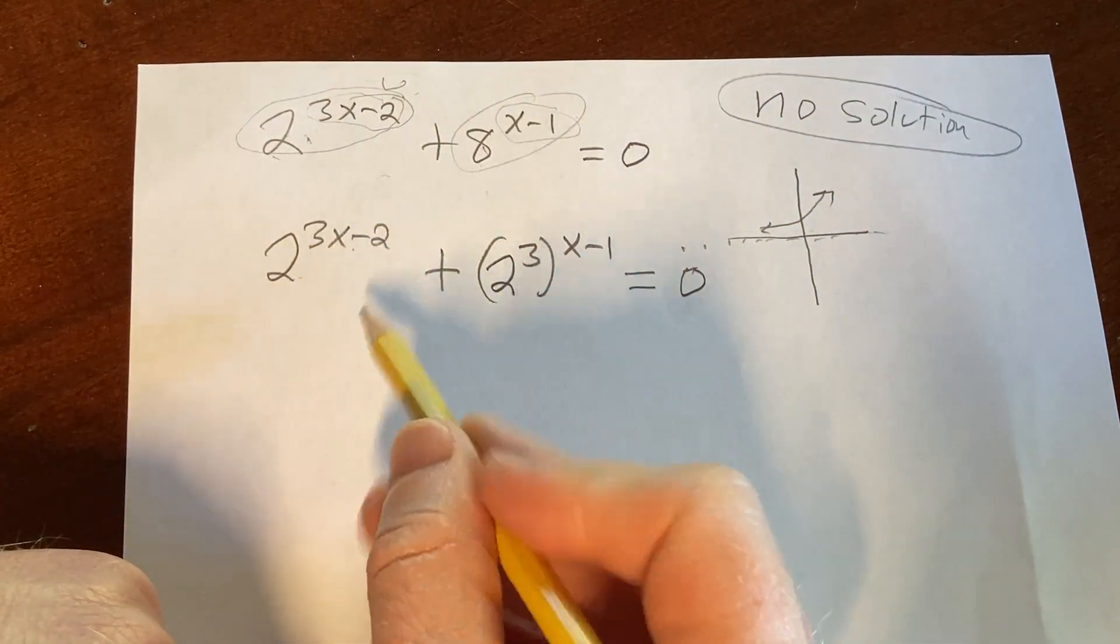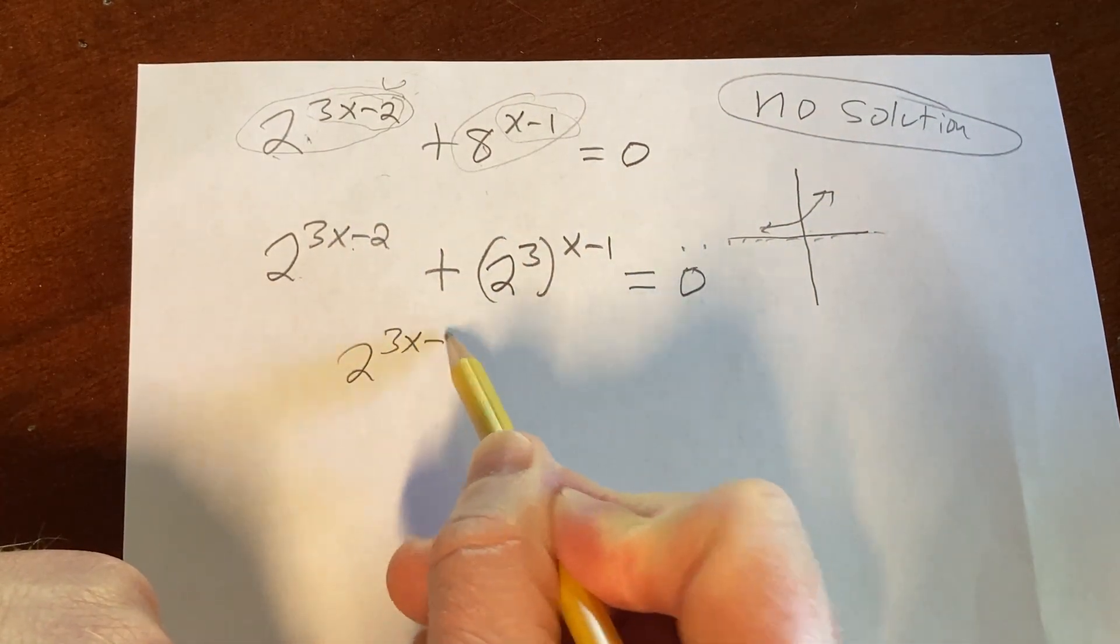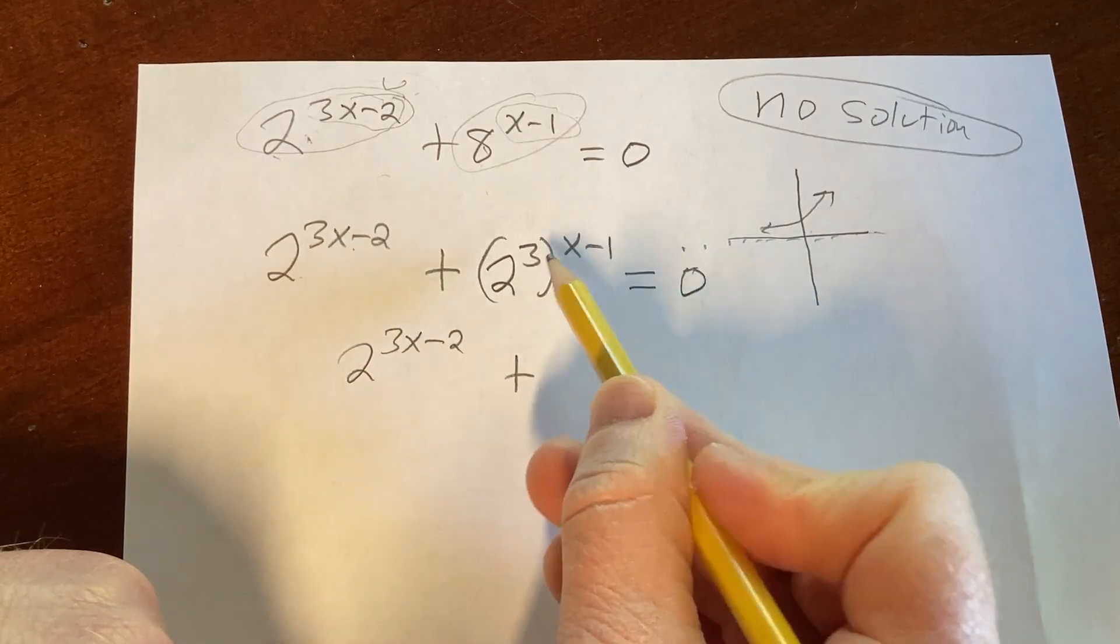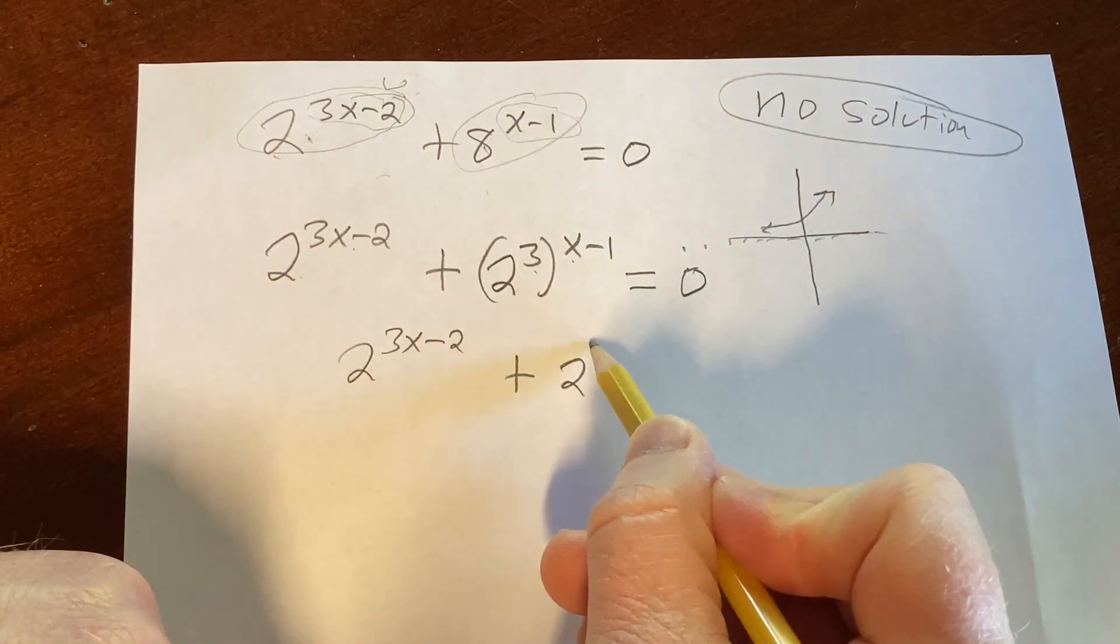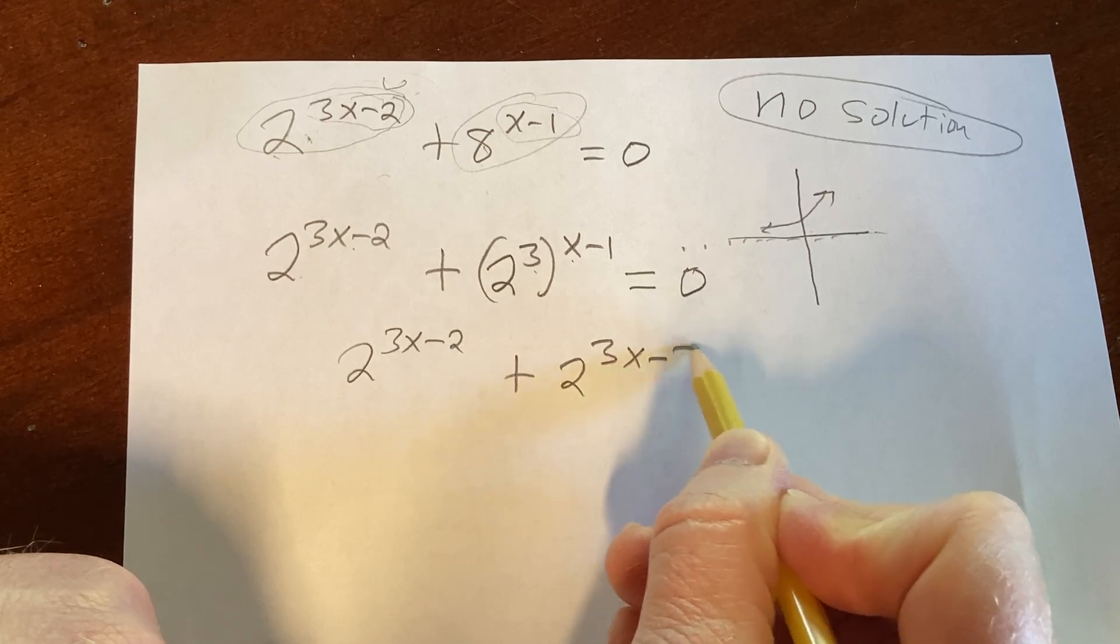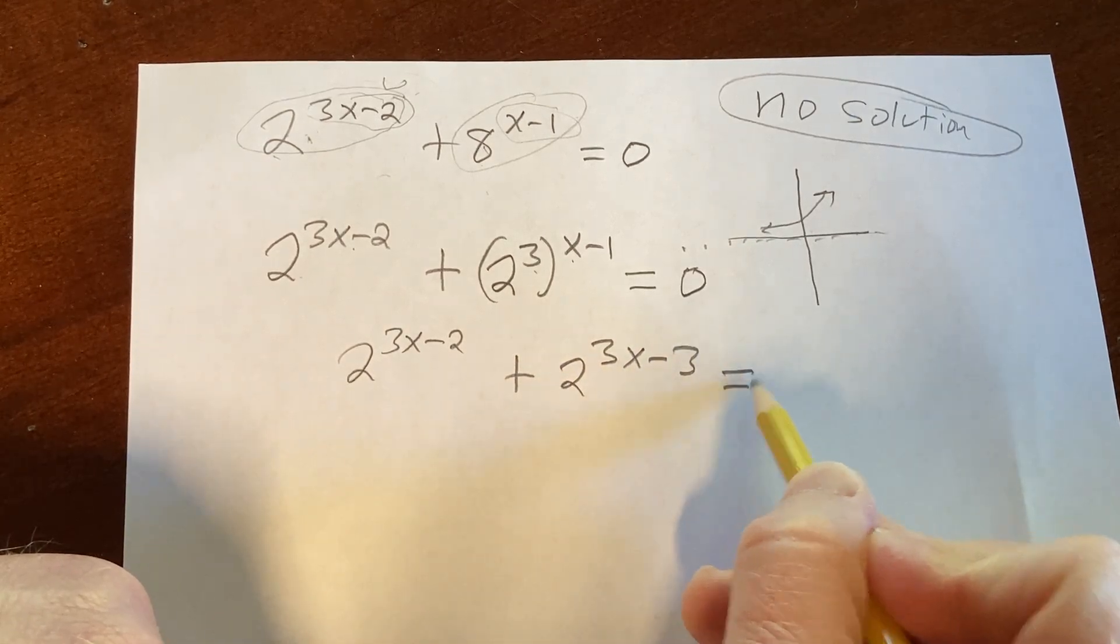And so now we get 2 to the 3x minus 2 plus, and then here we can distribute the 3, it's going to be 2 to the 3x minus 3. All of this is equal to 0.